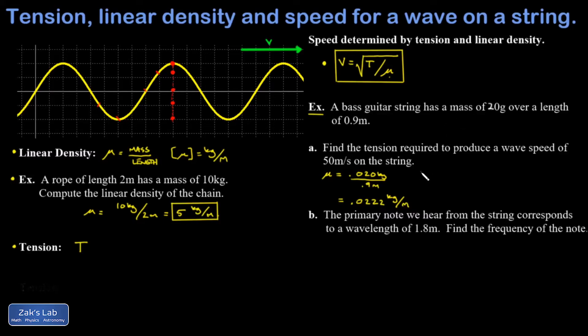Okay, then I get into the algebra of isolating T. Square both sides, multiply by mu on both sides. And now I can just plug in my numbers. And I kept a little extra precision in my calculation, and I got 55.6 Newtons. If you use my rounded answer for the linear density, you get 55.5.